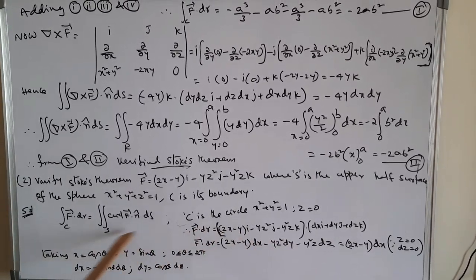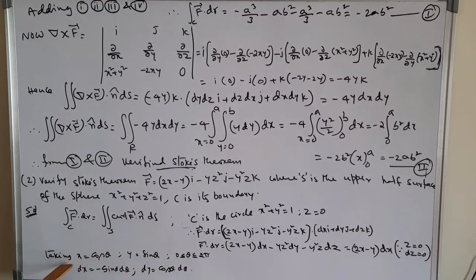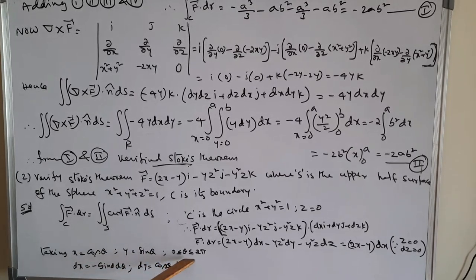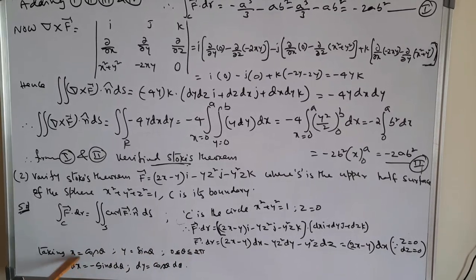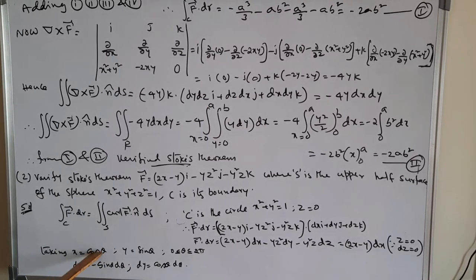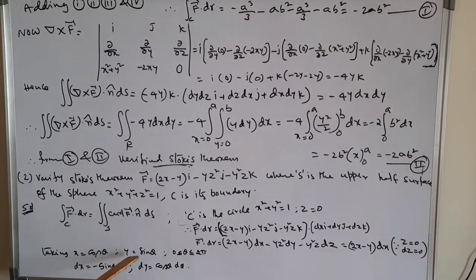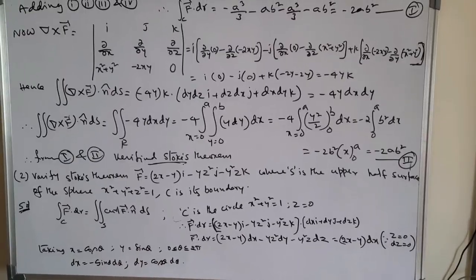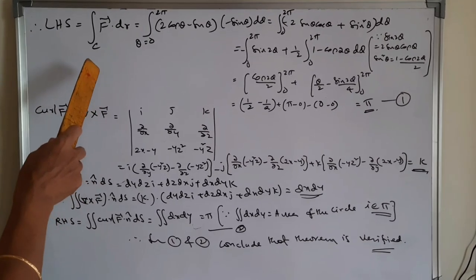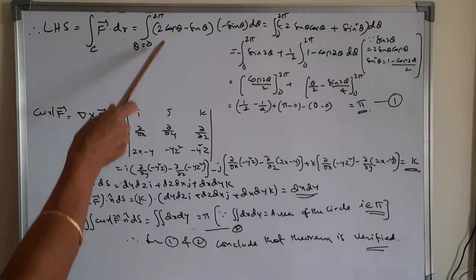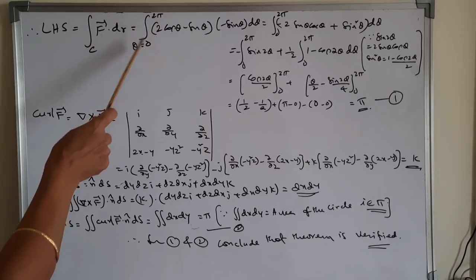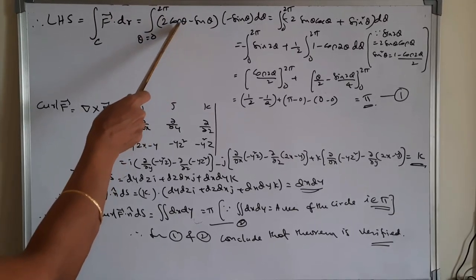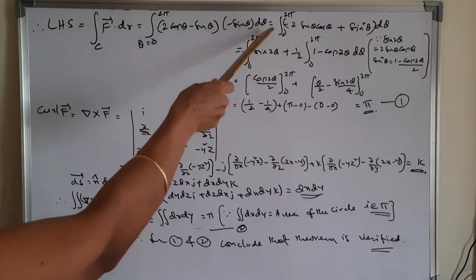To evaluate this, we use the parametric substitution: x = cosθ, y = sinθ, where θ varies from 0 to 2π. Therefore dx = −sinθ dθ and dy = cosθ dθ. The LHS integral becomes: integral from θ = 0 to 2π of (2cosθ − sinθ)(−sinθ dθ) = integral of (−2sinθ cosθ + sin²θ) dθ.